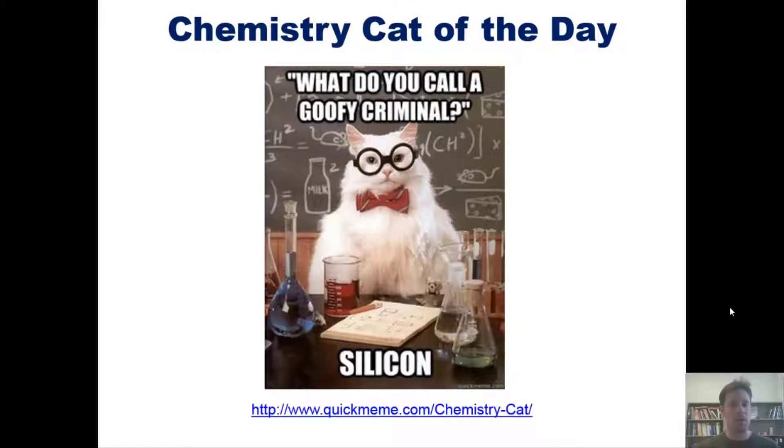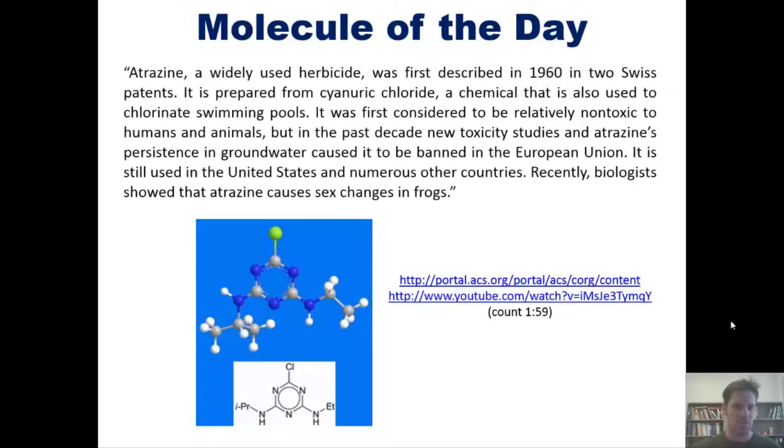I'd also like to share with you a magical molecule of the day from the American Chemical Society molecule portal. This one is atrazine. Atrazine, a widely used herbicide, was first described in 1960 in two Swiss patents. It's prepared from cyanuric chloride, a chemical that is also used to chlorinate swimming pools. It was first considered to be relatively non-toxic to humans and animals, but in the past decade, new toxicity studies and atrazine's persistence in groundwater caused it to be banned in the European Union. It is still used in the United States and numerous other countries. Recently, biologists showed that atrazine causes sex changes in frogs.